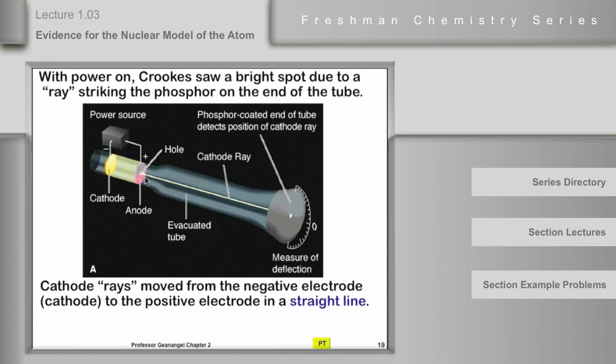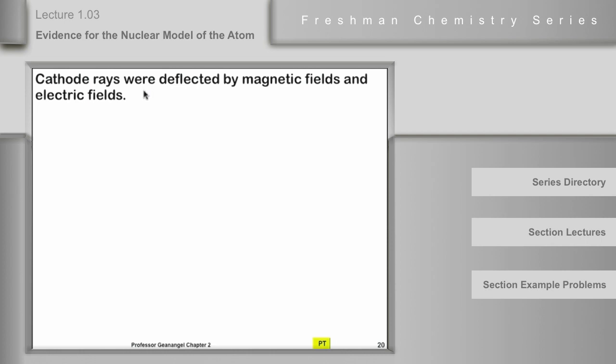Keep in mind that part of Dalton's theory was that atoms are indivisible, so there was a lot of thought about whether these things were atoms or what they might be. Several experiments were done. One of them found that the cathode rays were deflected both by magnetic fields and electric fields, suggesting that whatever those things were in that ray, they had a charge.